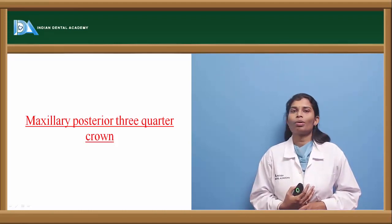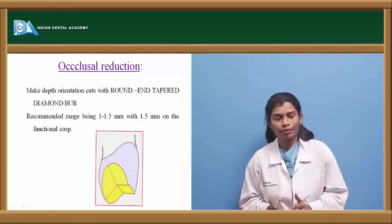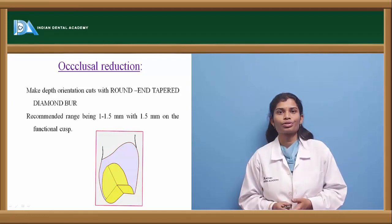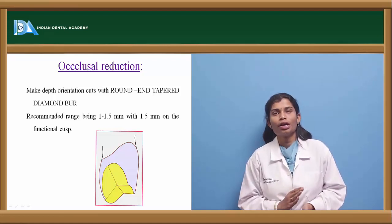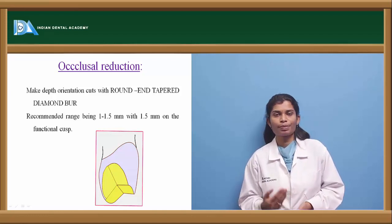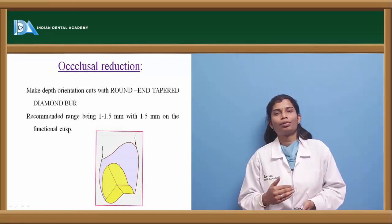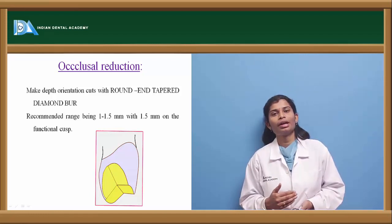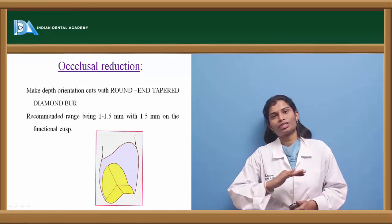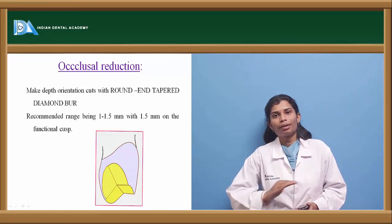Preparation of the maxillary posterior three-quarter crown: Start with occlusal reduction using a tapered rounded diamond to place depth orientation grooves. The amount of reduction depends on the restorative material — for totally cast metal: 1 mm on the non-functional cusp and 1.5 mm on the functional cusp; for porcelain-fused-to-metal: up to 2 mm on the functional cusp side and 1.5 mm on the non-functional cusp side. After occlusal reduction, place the functional cusp bevel by positioning the bur at 45 degrees to the axial surface.